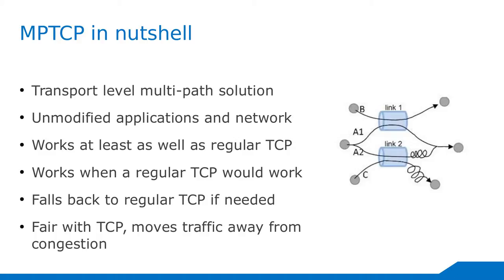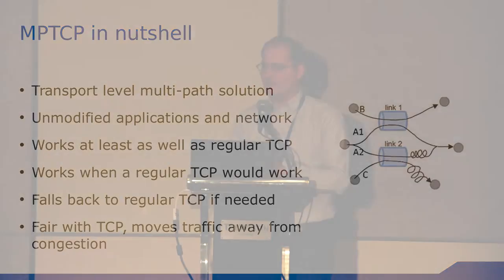It tries to do so in a compatible way — application compatible as well as network compatible. The idea being that you don't want to change the application once you have multipath TCP support in the stack; then you don't need to recompile your application. You'll just be able to use the multipaths available if there are any. It should work as well as TCP, and it should fall back to TCP if we cannot use the multipath extension, so at least we have the connections going.